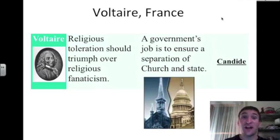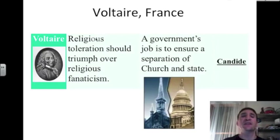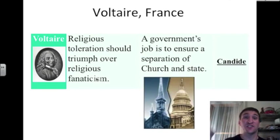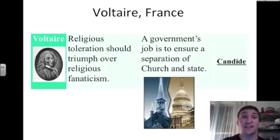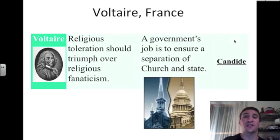Next, another French philosopher — this philosopher's name was Voltaire, a pen name he gave himself, not his birth name. Voltaire believed in religious toleration, saying it should triumph over religious fanaticism, because religious fanatics made a society worse off. He believed it is the government's job to ensure a separation of church and state, and the founding fathers of the United States used his ideas in our Constitution. The book in which he expressed these ideas was called Candide.